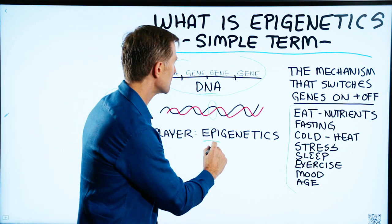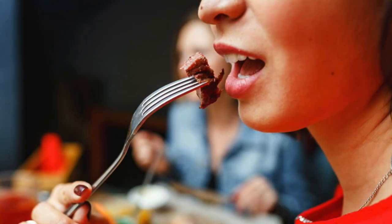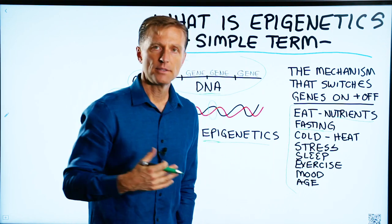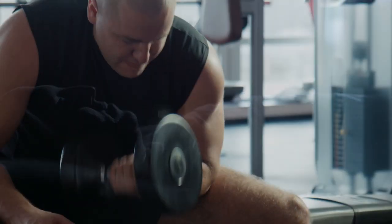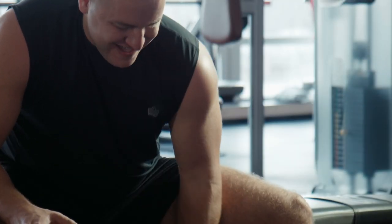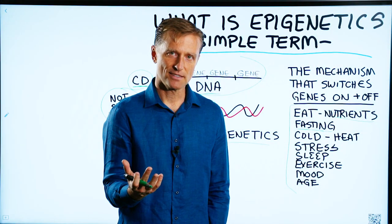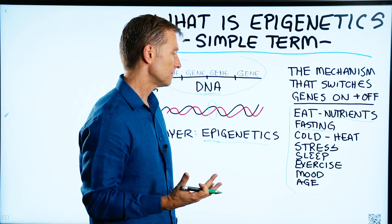Some triggers with epigenetics include your environment — like what you eat, the nutrients in your food, when you eat, and when you're not eating, such as fasting. Also temperature, cold and heat, your stress level, sleep, exercise, and the type of exercise you do. Your mood can affect your genes, and your state of mind can affect your genes, which is pretty cool. Your age will also affect your genes.